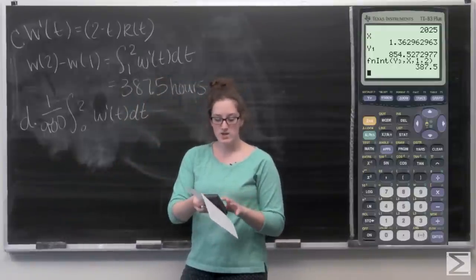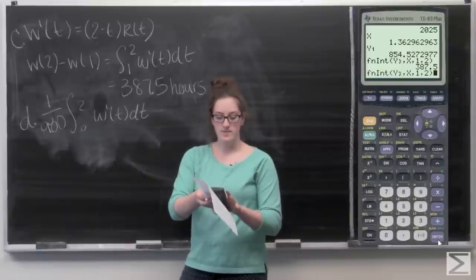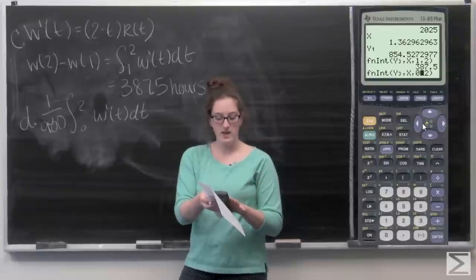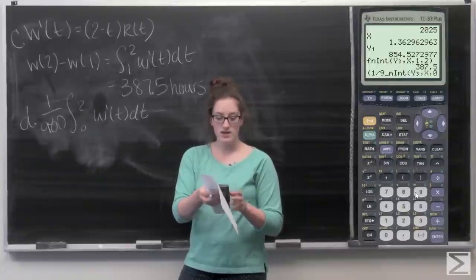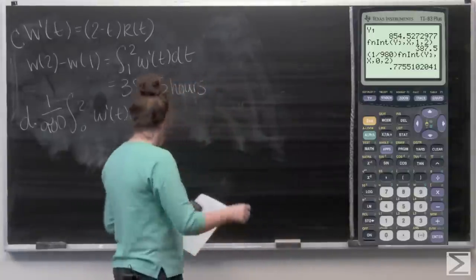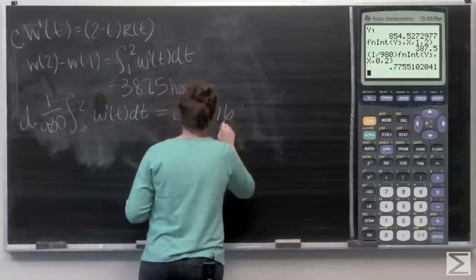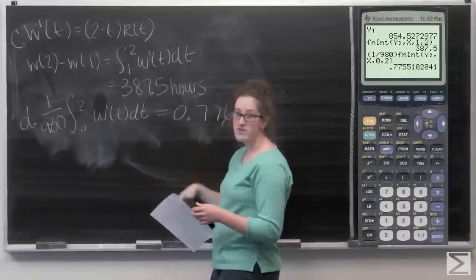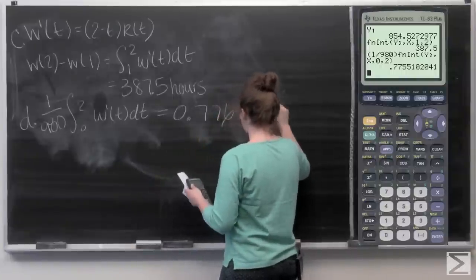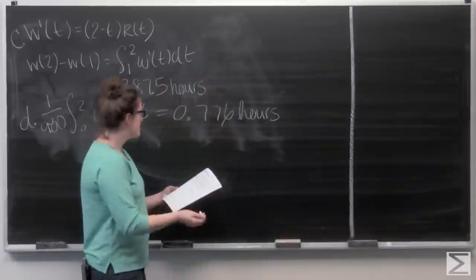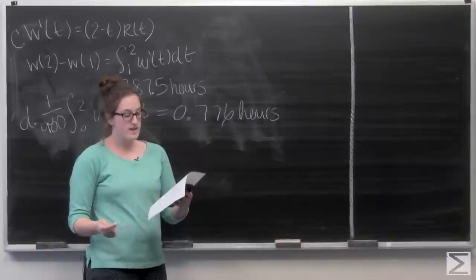On my calculator I call up the previous command using Second, Enter, change the bounds from 1 to 2 to 0 to 2, and insert a factor of 1 divided by 980 at the front. Hitting Enter gives 0.776. On average, a person waits 0.776 hours in the auditorium for the concert to begin.